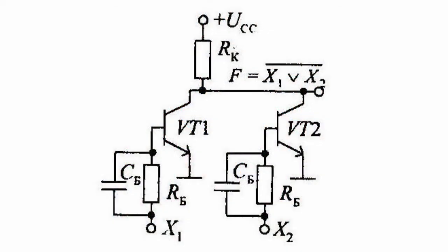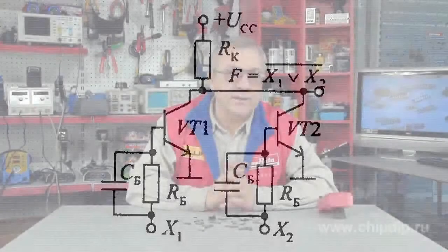Resistor capacitor coupled transistor logic circuits are shunted with capacitors to accelerate transit phenomena. When the previous element is switched, such capacitors shunt resistors for a while. This increases base currents and reduces the build-up time.